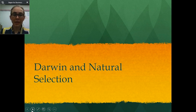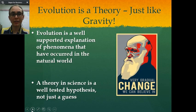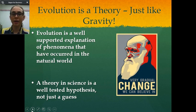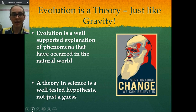Hi guys, welcome to your lecture on Darwin and natural selection. This is the first lecture in our evolution unit. Evolution is a scientific theory, but first we need to discuss what a theory is in science. It is not just a guess, like it may be in some other subjects. Theories in science are very well supported with tons of evidence, and they explain how phenomena occur or have occurred in the natural world.